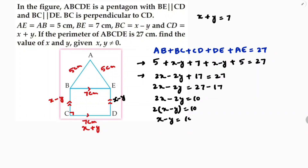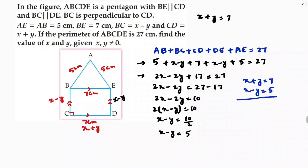Taking 2 as common, x minus y equals 5. Now we have two equations: x plus y equals 7 and x minus y equals 5. Adding them gives 2x equals 12, so x equals 6 centimeters.